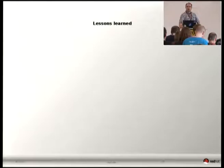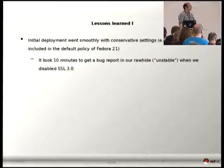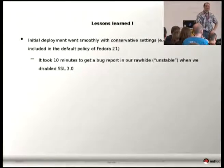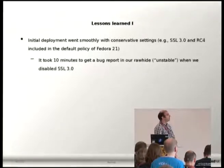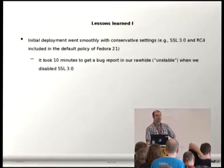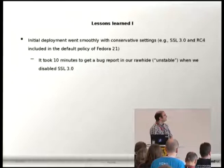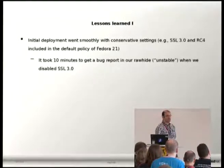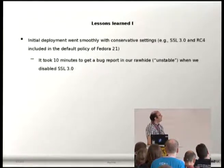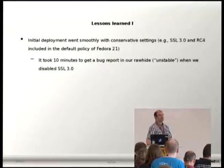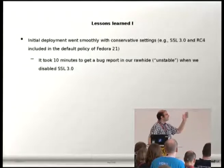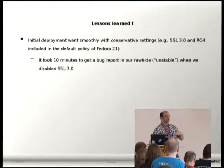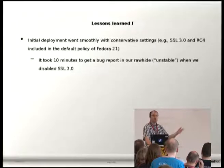A few lessons learned during this deployment. We had an initial deployment with Fedora 21 with very conservative settings — the default level included SSL3 and RC4, it was before the Poodle attack — and it went pretty smoothly because of that. When in Fedora 22 we decided to drop SSL 3.0, it didn't take more than 10 minutes to receive a bug report that we broke something. The lesson is that it's better to be conservative in the beginning during a pilot, because there are applications that could only use SSL 3.0 — not because of Fedora, but because the Windows server was only using SSL 3.0.